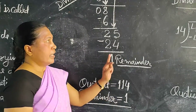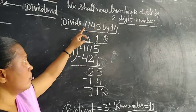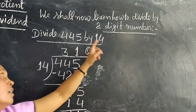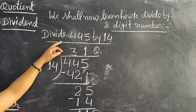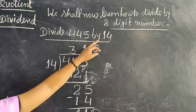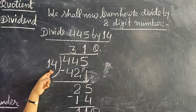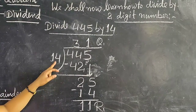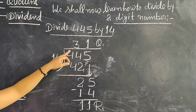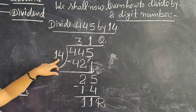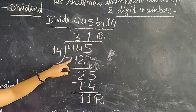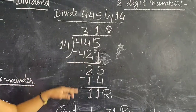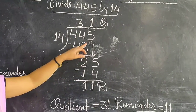We shall now learn how to divide by a two-digit number. Here, four hundred forty-five divided by fourteen. Fourteen is a two-digit number. So, we will divide. Forty-four divided by fourteen. Fourteen three is forty-two. Forty-four minus forty-two equals two. And bring down five, so here is twenty-five.